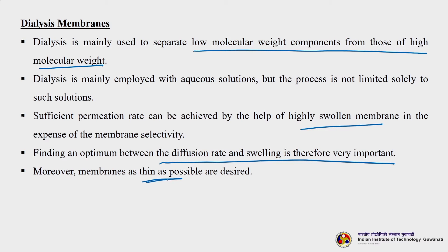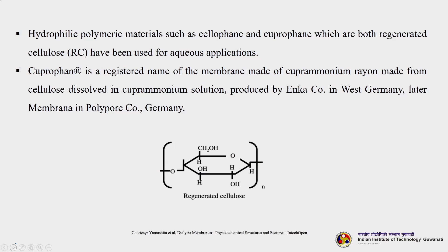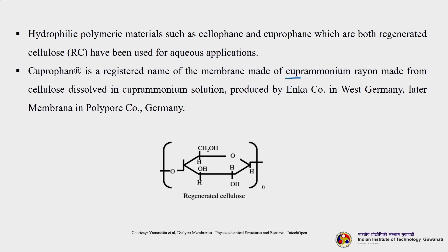Membranes as thin as possible are desired. Hydrophilic polymeric materials such as cellophane and Cuprophan — both regenerated cellulose — have been used for most aqueous applications. Most dialysis membranes are from RC (regenerated cellulose). Cuprophan is a registered name for membranes made from cupro-ammonium rayon, produced from cellulose dissolved in cupro-ammonium solution, produced by Enka Corporation in West Germany (later Membrana/Polypropor Corporation, Germany).